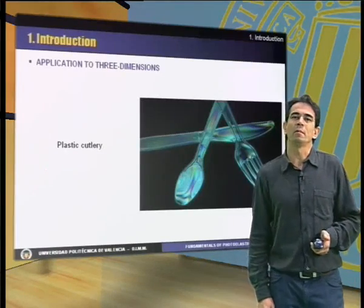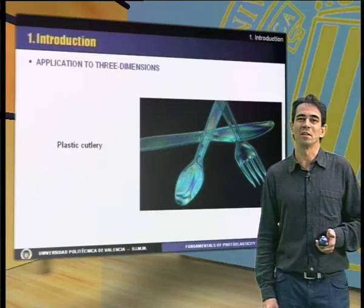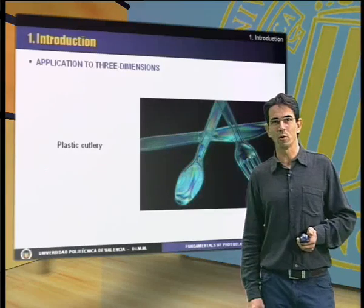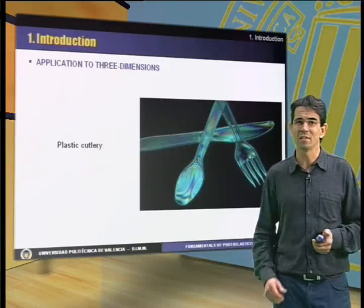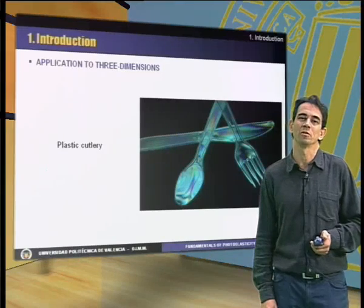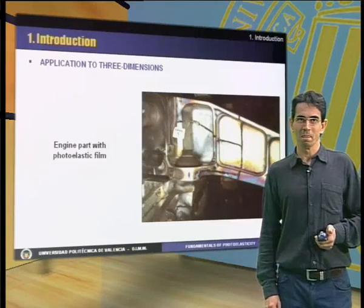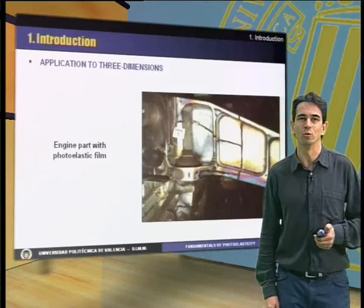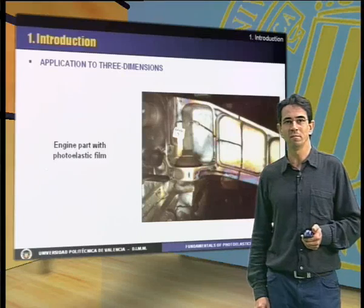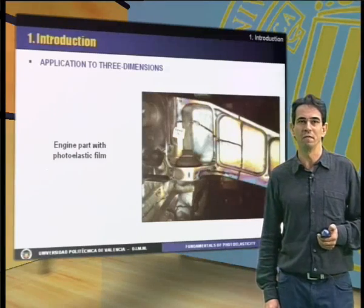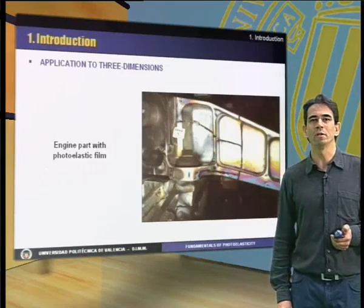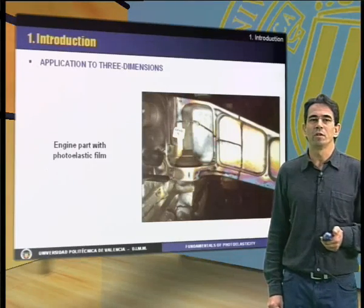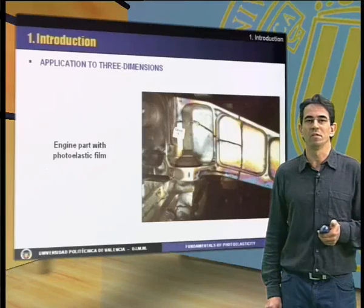Three-dimensional models are very useful because they enable ascertaining the stress state inside a loaded body. This is achieved by curing a model under the applied loads and then slicing it through different cross sections. For real components in service, special photoelastic coatings can be used — this is a very versatile technique. The coating, called a polarizing film, is applied on the component, enabling analysis of mechanical components of any size and under actual in-service conditions.